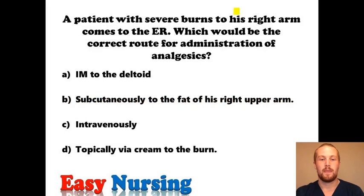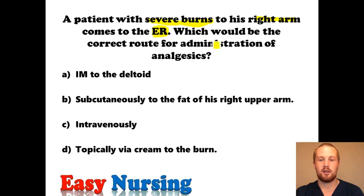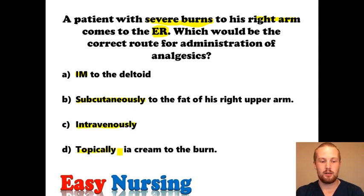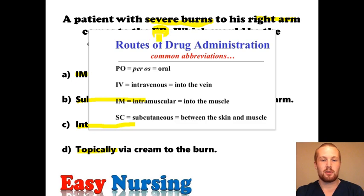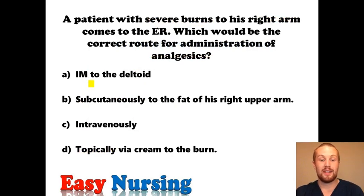Next question: a patient with severe burns to his right arm comes to the ER — so this is emergent. What would be the correct route for administration of analgesics? We're talking about the emergent phase of burns. We have several options: an IM shot to the deltoid, subcutaneous to the fat of the arm, intravenous, and topically. Since this is emergent, they want quick pain relief, so the correct answer is intravenously.